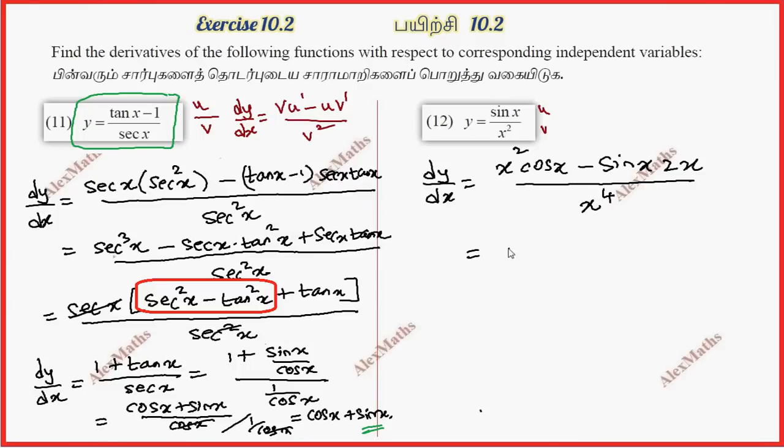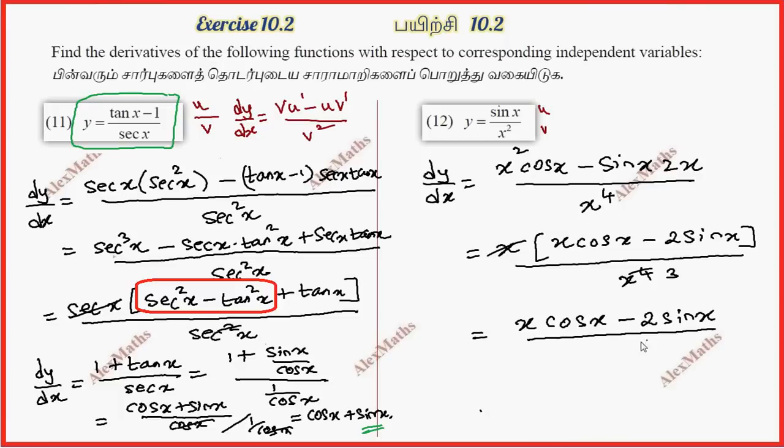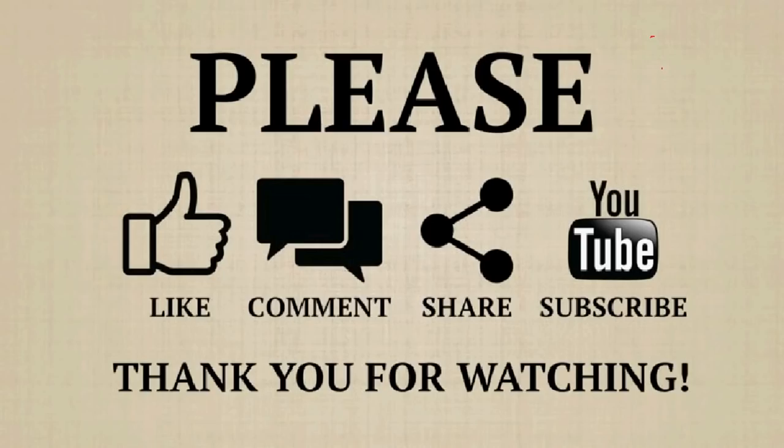x power 4. The numerator LCM, x is common, so x cos x minus 2 sin x, whole divided by x power 4. Now canceling, x cube remains. So x cos x minus 2 sin x, whole divided by x cube. Thank you.